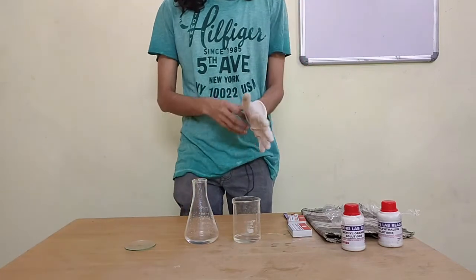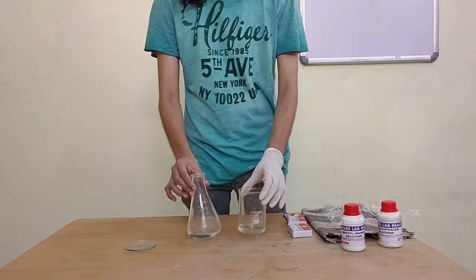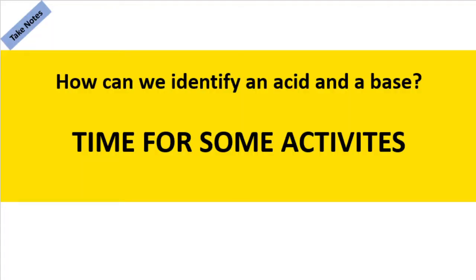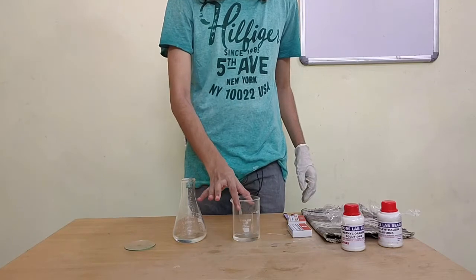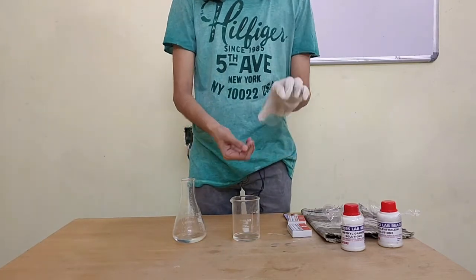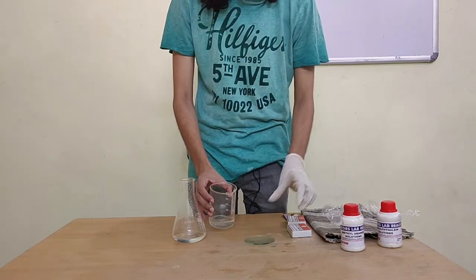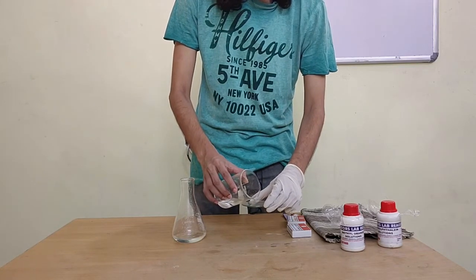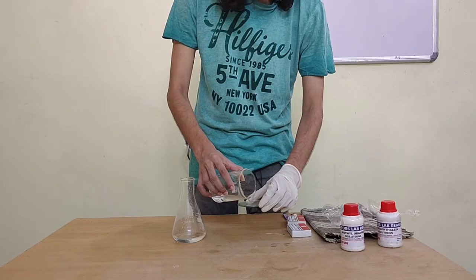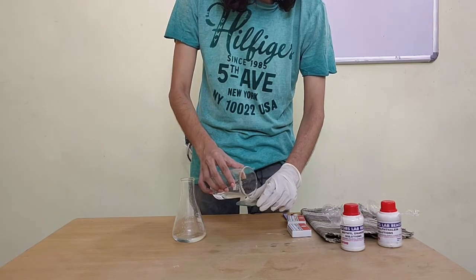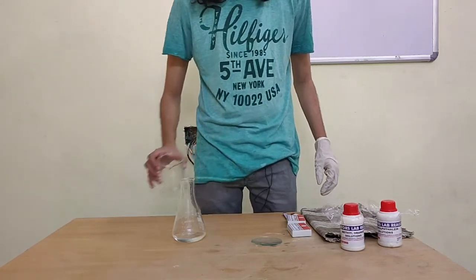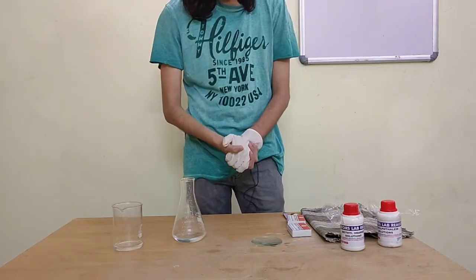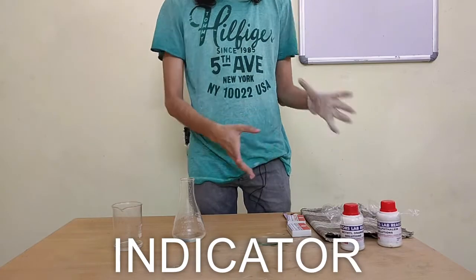We will be looking at identifiers for acids and bases so we can figure out what's in each of these beakers. I'll start with the first solution, pour some into this watch glass — it's a little dish — just a bit for testing. Now I need to figure out whether this is an acid or a base. To help with this, there is something called an indicator. To indicate means to show something.